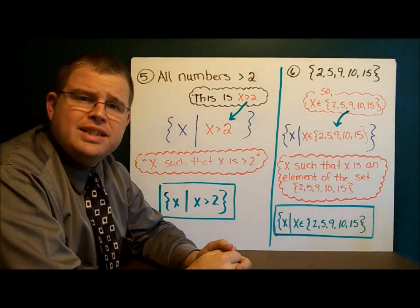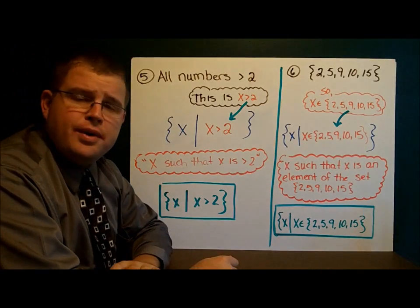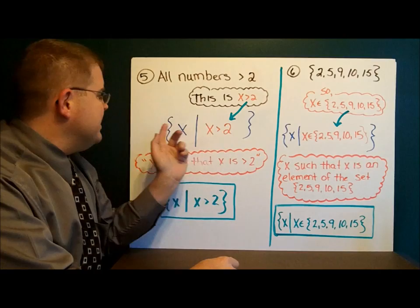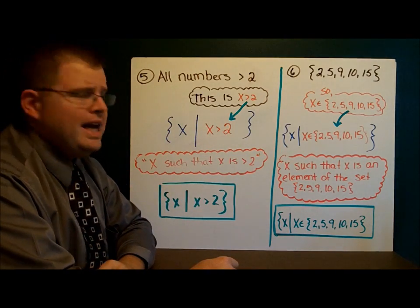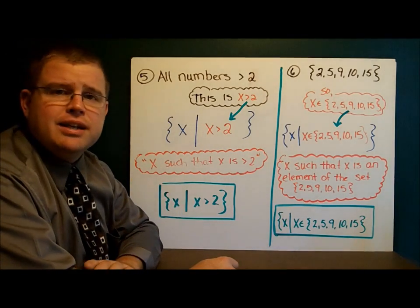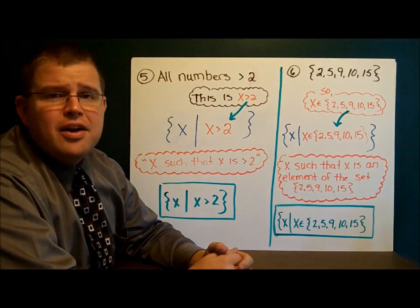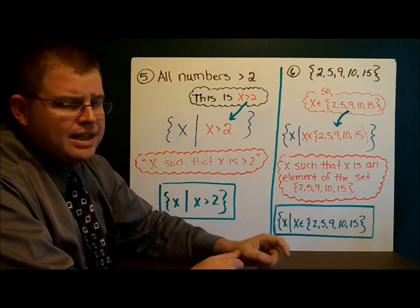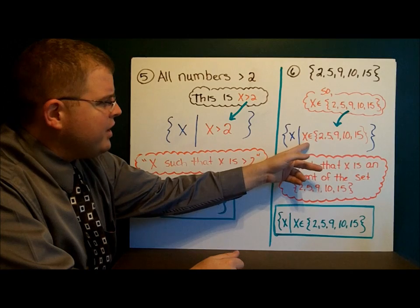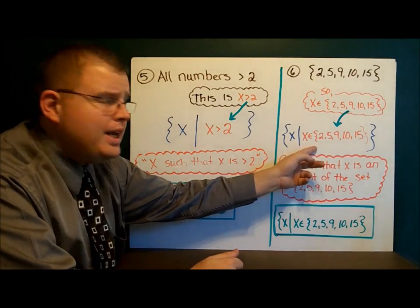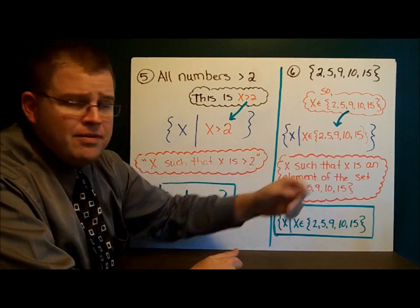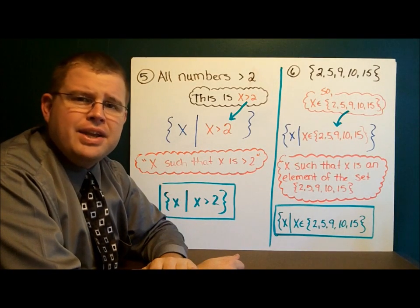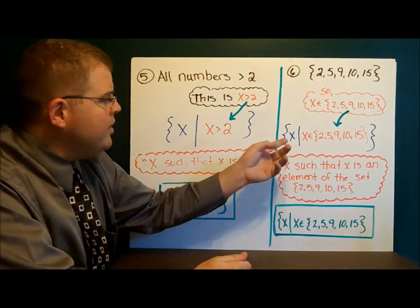Here are a few examples. For all numbers greater than 2 — x is greater than 2 — we write 'x such that x is greater than 2' with the squiggly braces. Number 6 is a little different: we have a set written in roster notation and we put it inside the box, but we need a variable on the left side. So we say 'x such that x is an element of that set' written in roster notation. It looks a little confusing at first, but it's really all we've been doing before — just inside this nice package.